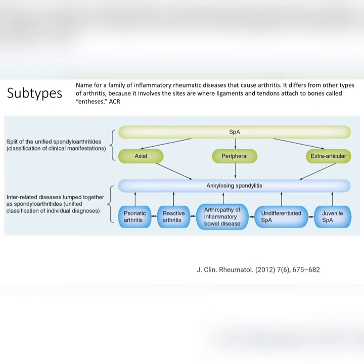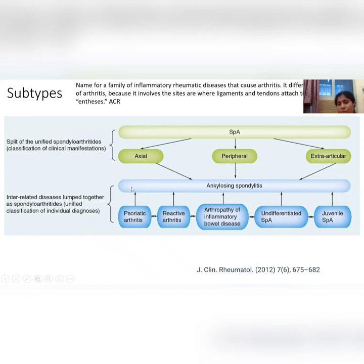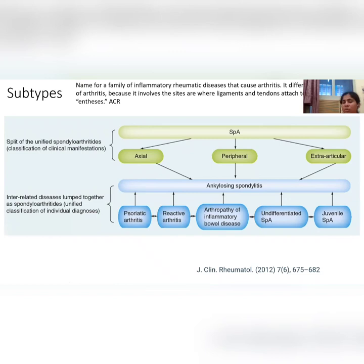Classically, spondyloarthropathy is divided into five types: ankylosing spondylitis, psoriatic arthritis, reactive arthritis, inflammatory arthropathies associated with inflammatory bowel disease (enteropathic arthritis), and undifferentiated spondyloarthropathy — used when a patient has features of SpA but cannot be classified into any of the named diseases.